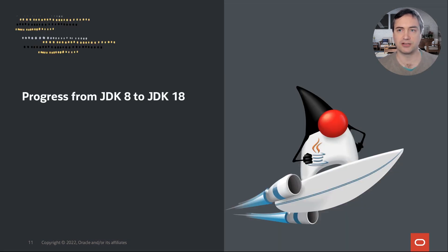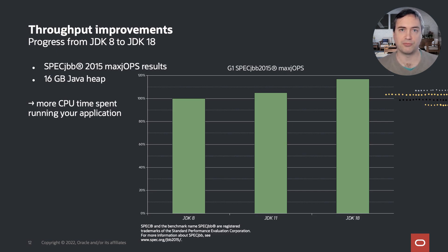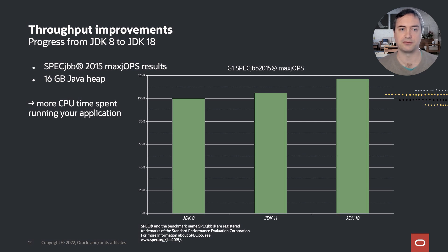After all that introduction, let's get to the main part of this presentation: what happened in the last 10 releases? First, I'm going to talk about throughput improvements. The graph shown here shows relative throughput versus JDK 8 for JDK 11 and 18. The scores graphed here are from SPECjbb 2015, run on a 16 GB Java heap with practically no other options set. SPECjbb 2015 simulates a complex data warehouse system. The graphed max-jOPS metric represents the throughput of that system. Just by moving to JDK 11, throughput increased by 5%, which is modest. But with JDK 18, by just dropping in the new JVM, you will get 17 to 18% throughput increase in this application.